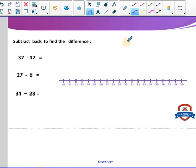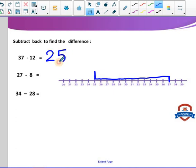37 minus 12. We start with 37. We start with 37 and we count back 12. Here we have 1, 2, 3, 4, 5, 6, 7, 8, 9, 10, 11, and 12. So 37 minus 12 will be 25.